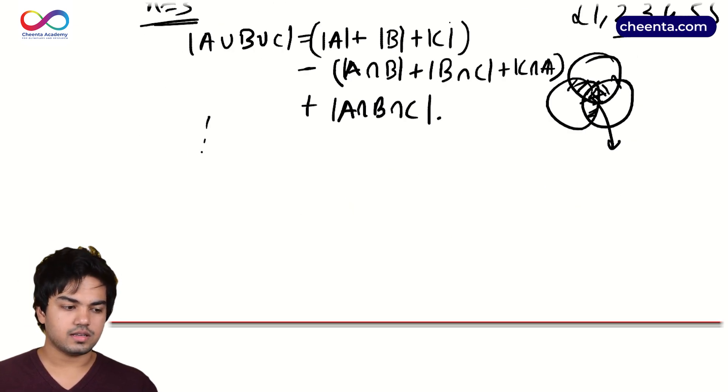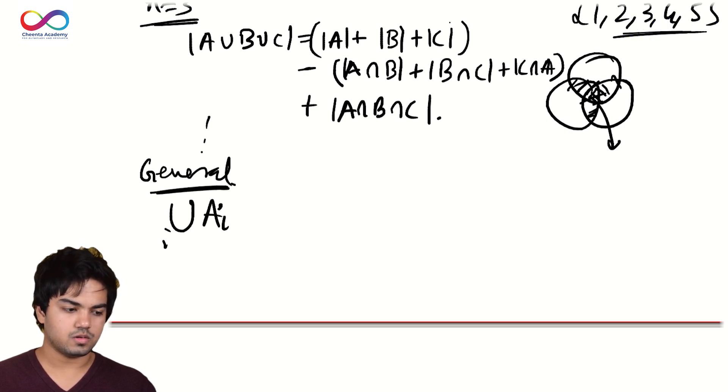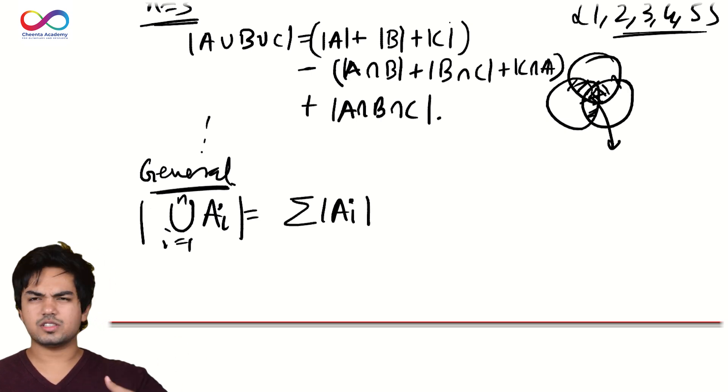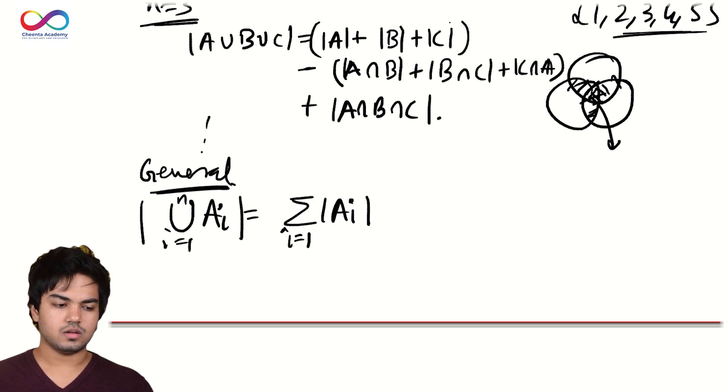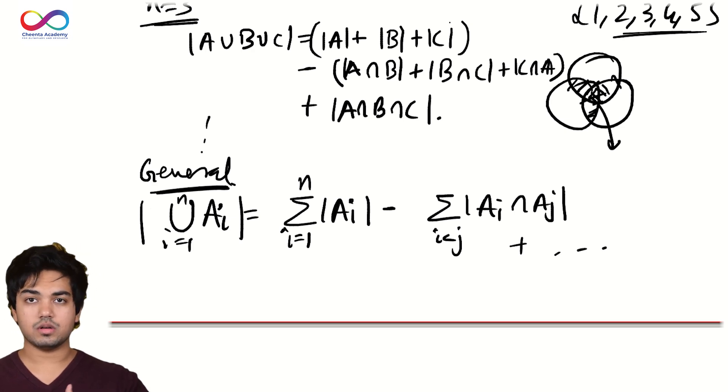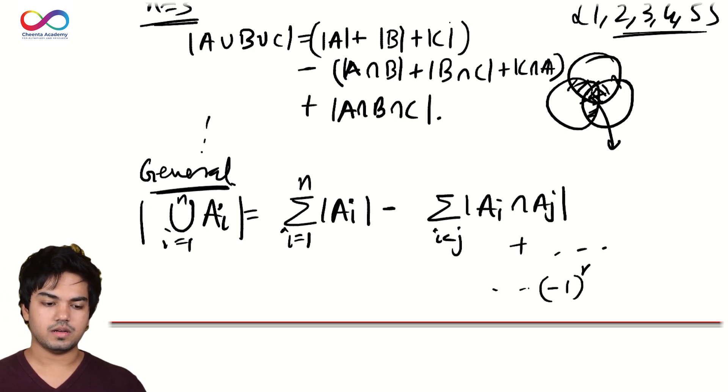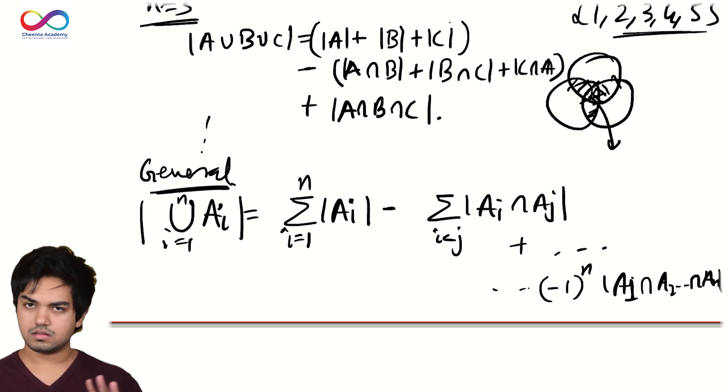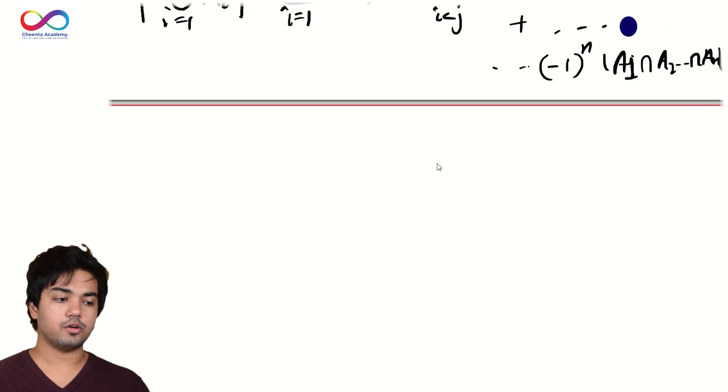And generally, for the general case, the union of A_i, i runs from one to N, is just sum of |A_i| from one to N minus sum over |A_i intersection A_j| and plus and so on. Right? You take more and more intersections. In the end, you just have minus one to the power N times the mod of A_1 intersection A_2 intersection all the way to A_N. That's how the principle of inclusion exclusion works. It's a very basic result. And we use this here.